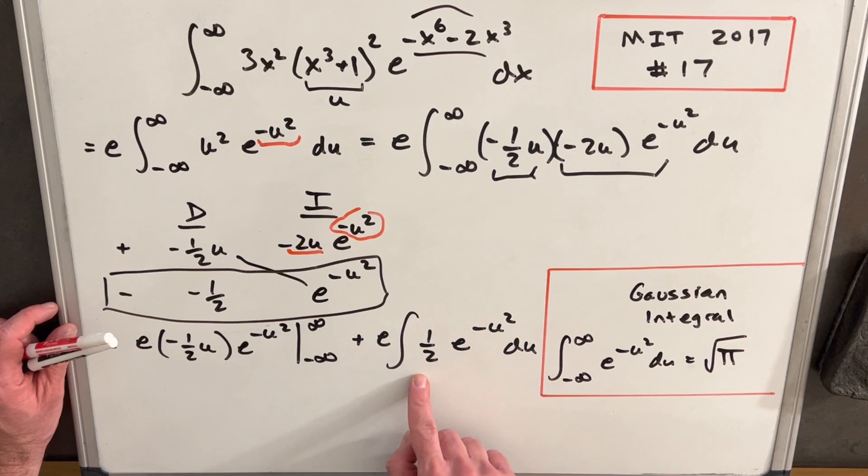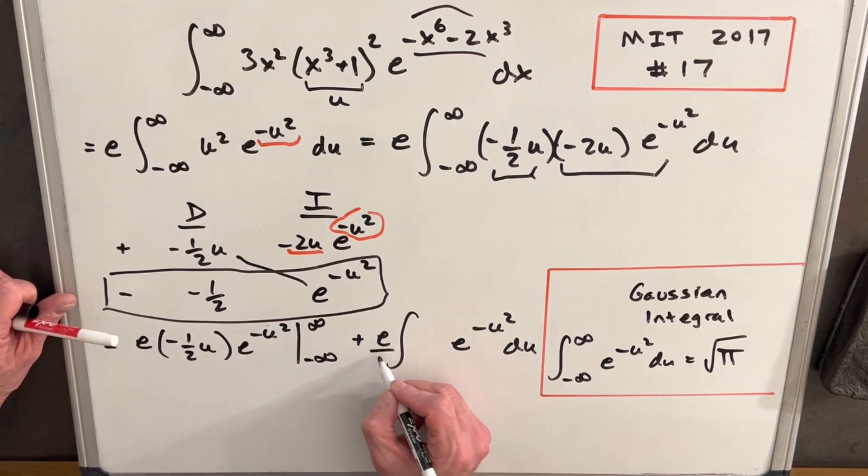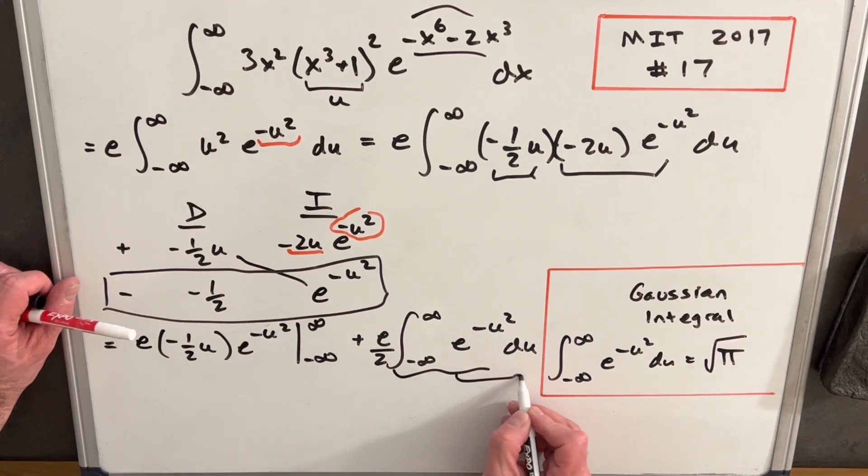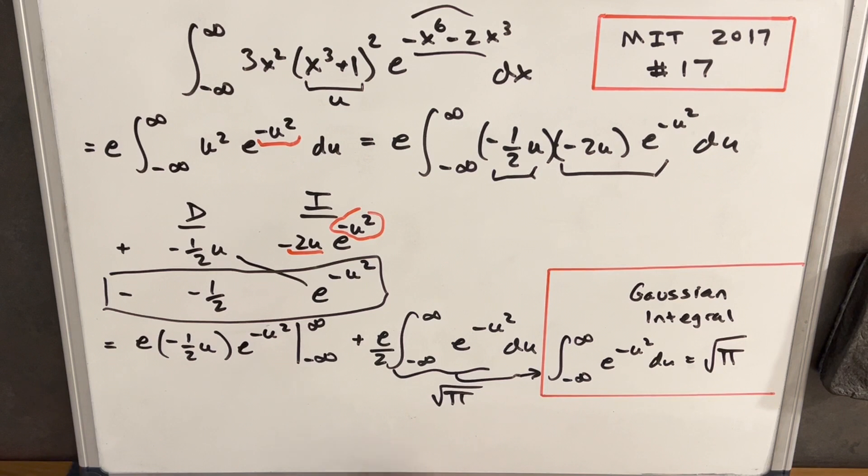But now this half here is just a constant value that we can bring out front. We'll bring that half in front and write it as a two in the denominator here. But then we notice this is exactly the same as our Gaussian integral over here, we're in the exact form. So this piece here, we already know the answer to this, this is square root of pi. So we have part of it, we just need to deal with this first part.